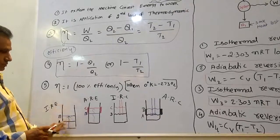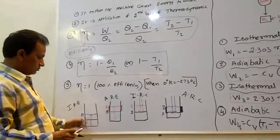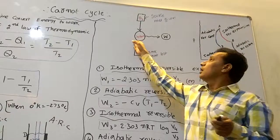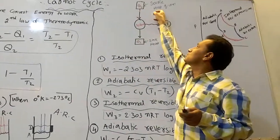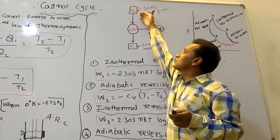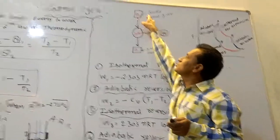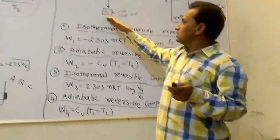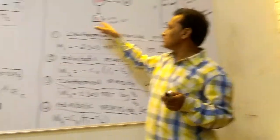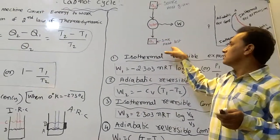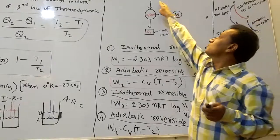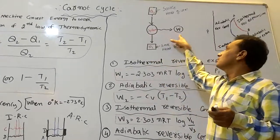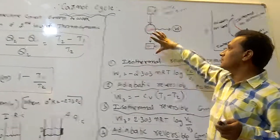He explains the system using powerful pistons. The engine absorbs heat Q2 from the source, does some work W, and some of the heat is released into the sink — the surrounding — that is Q1. Q1 means heat lost, Q2 means heat absorbed. The engine absorbs some heat, does some work, and loses some heat — that is the Carnot cycle.